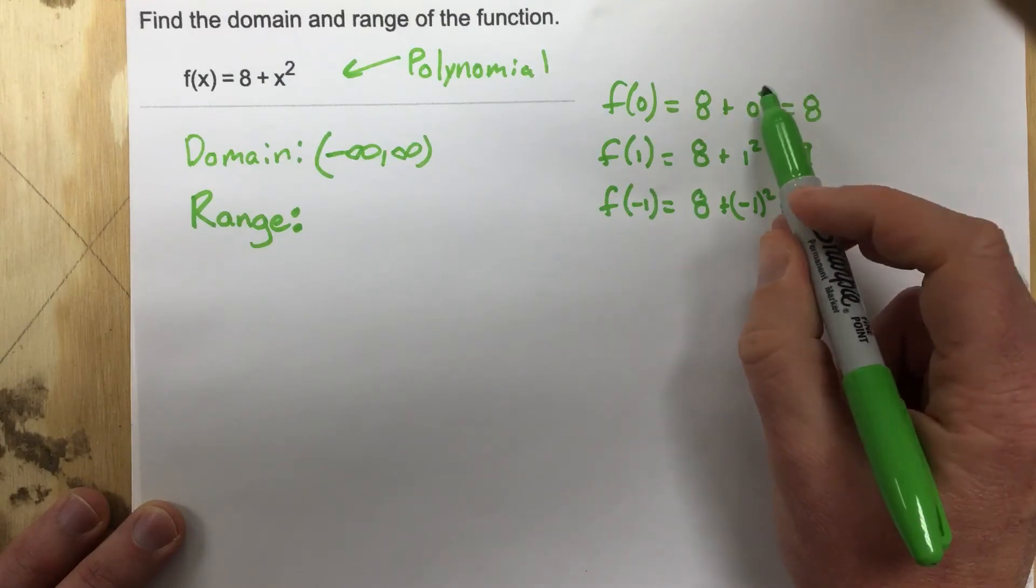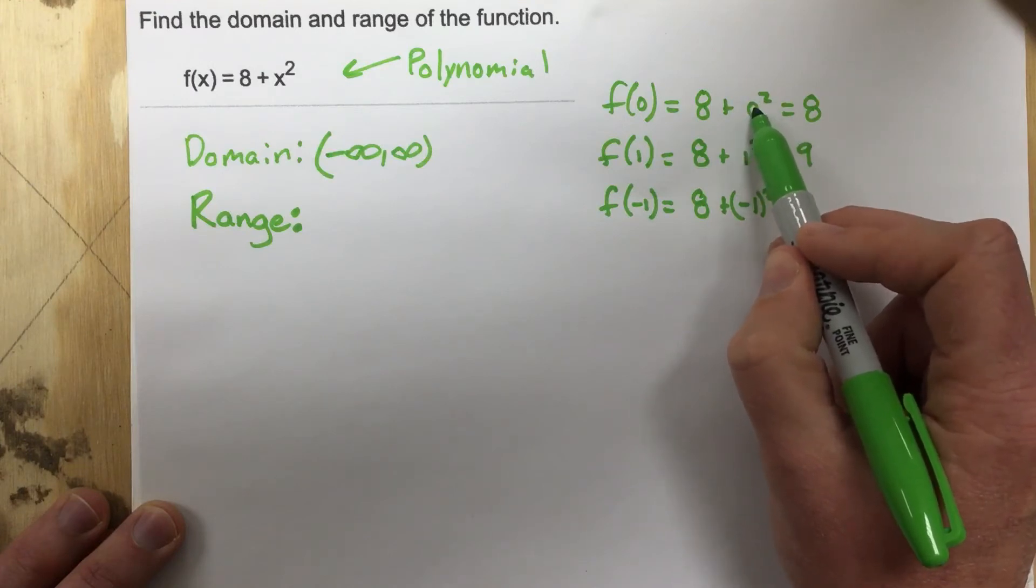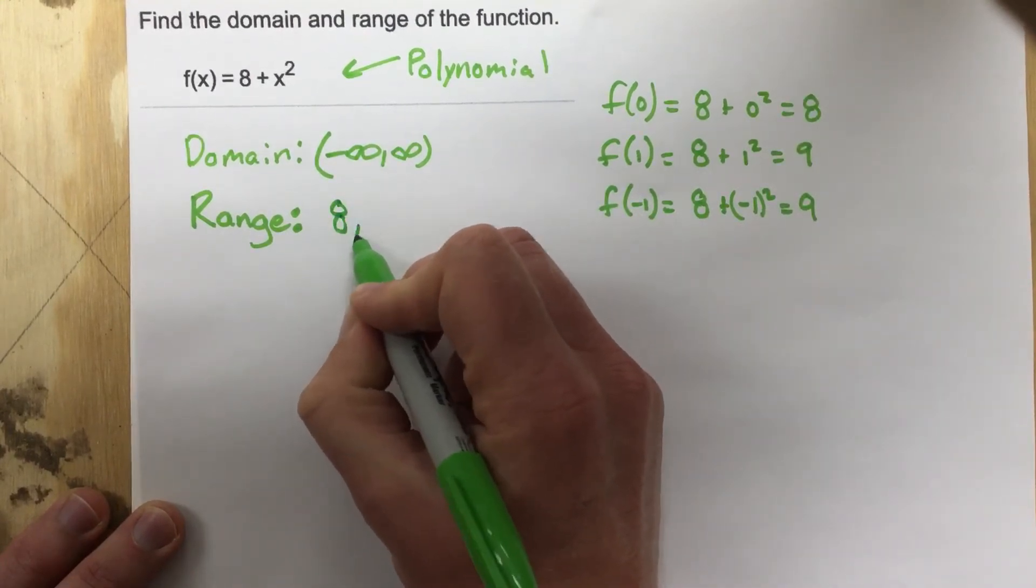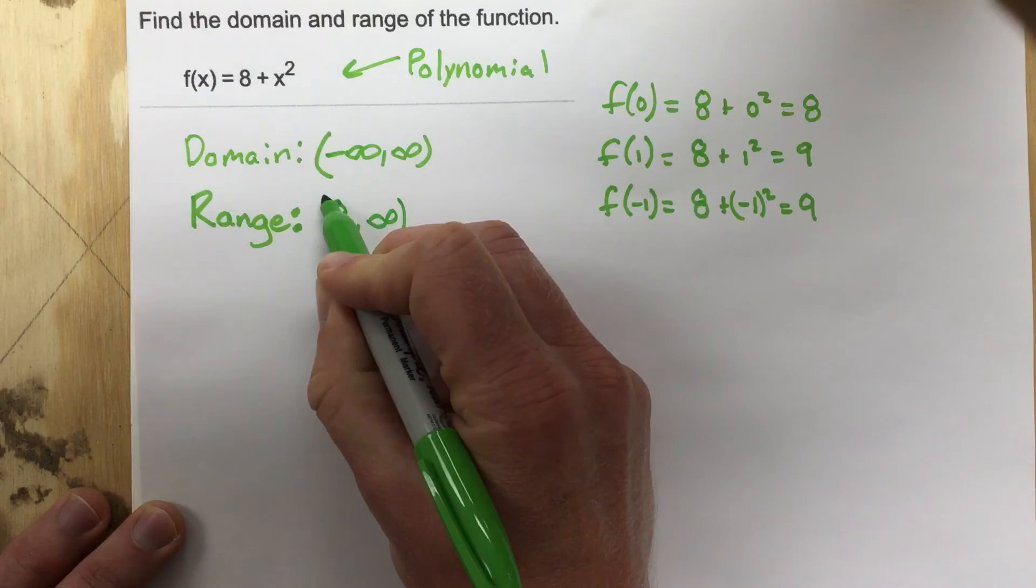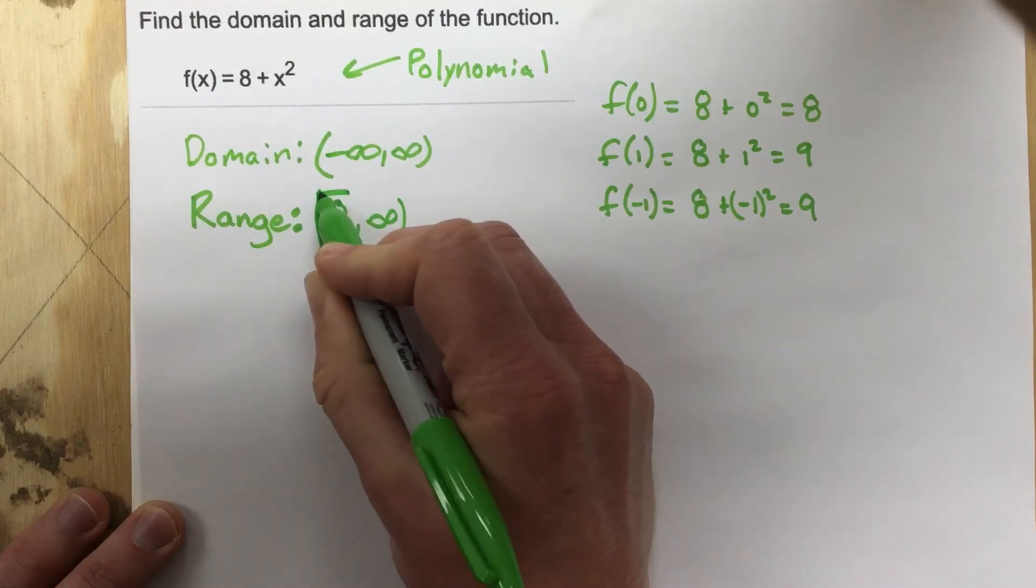So at the point of an x value of 0, that's when I have the lowest possible value. So my range is going to run from 8 to infinity. And I'm going to include 8 there because 8 is part of the range.